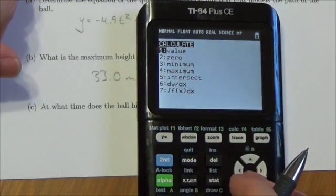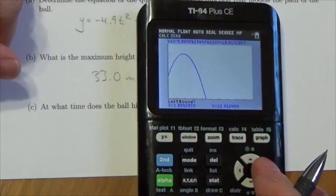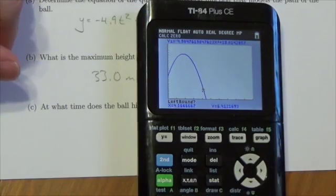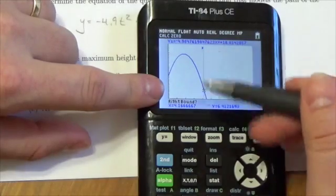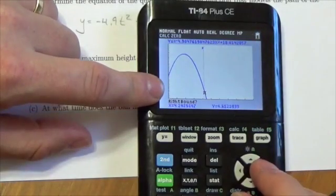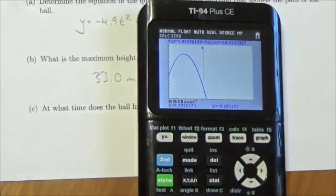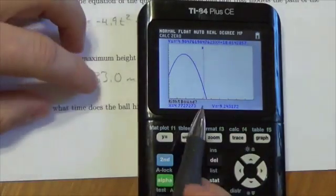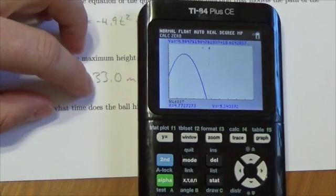So I press second trace. This time I'm looking for the zero. So I'm going to move the cursor to the right. I'm going to stop here though, not quite there. Press enter. And that puts a line right there. And I'm going to kind of bury the cursor there. I know it's going to be to the right of the x-intercept because of the way the curve goes. Press enter.